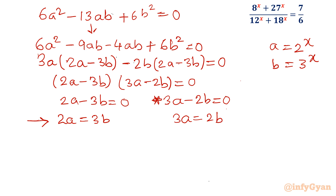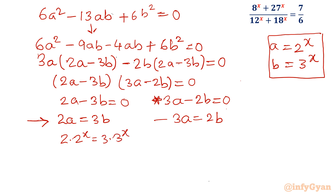From the first equation, 2 into 2 power x equals 3 into 3 power x. By the exponent rule, this becomes 2 raised to the power x plus 1 equals 3 raised to the power x plus 1. The base is different — 2 and 3 — but the exponent is the same on both sides: x plus 1 equals x plus 1.